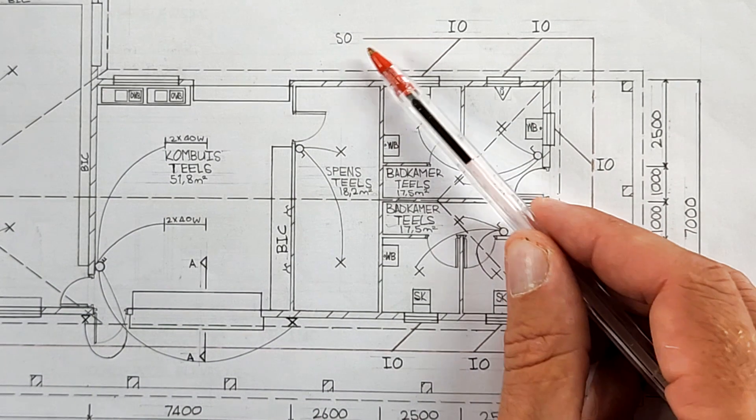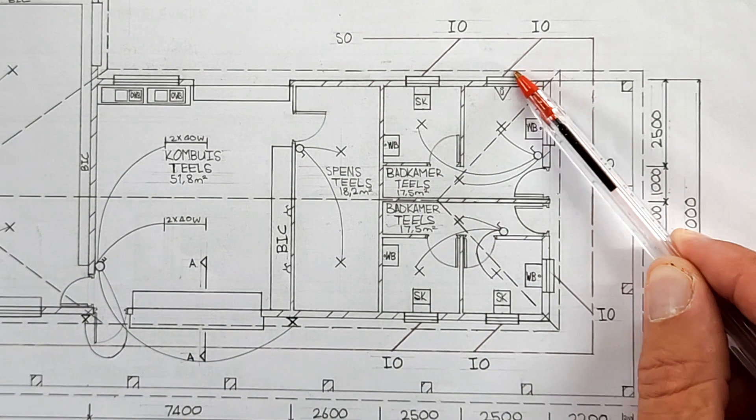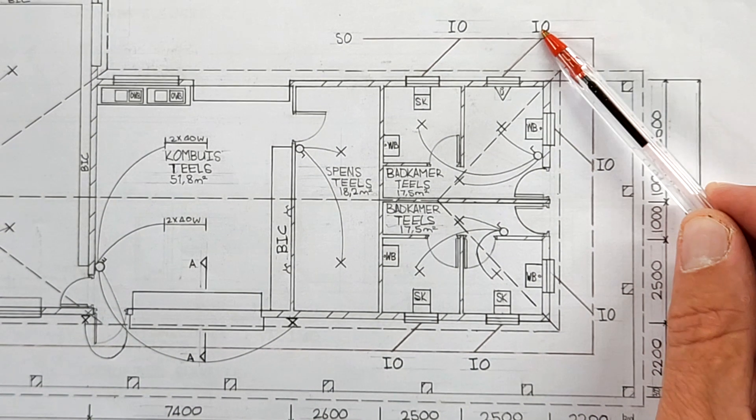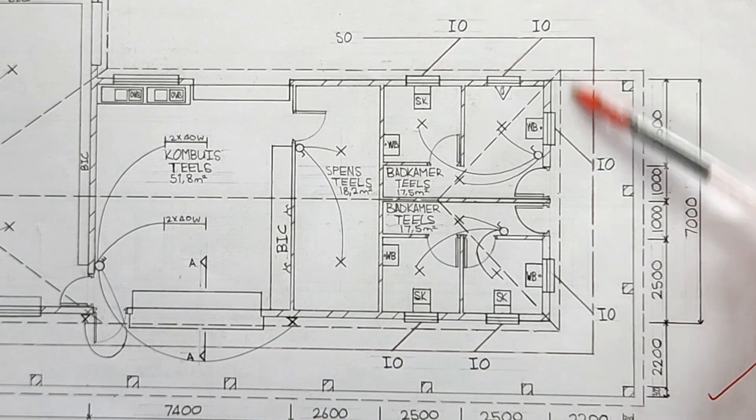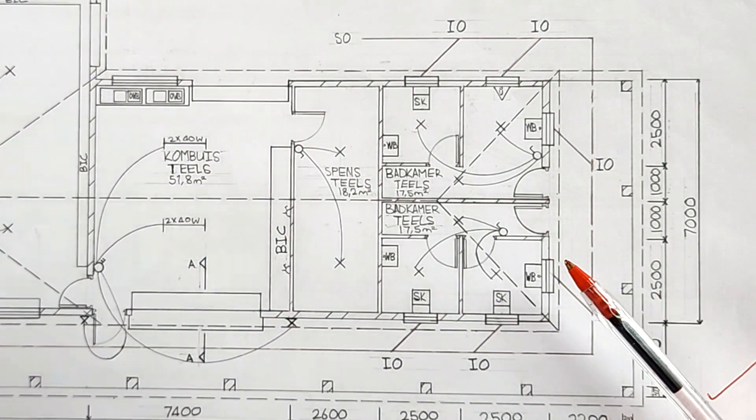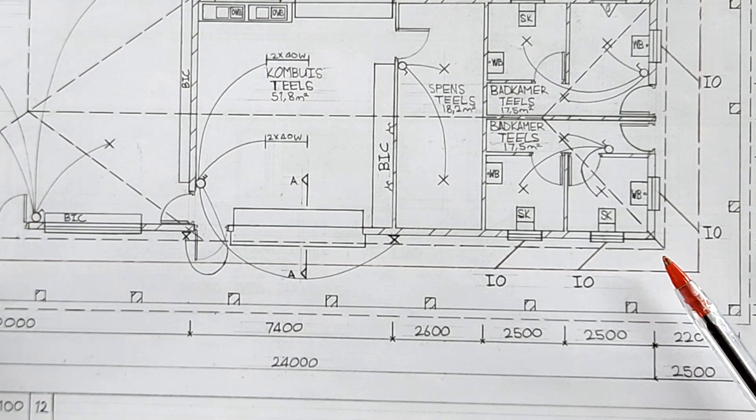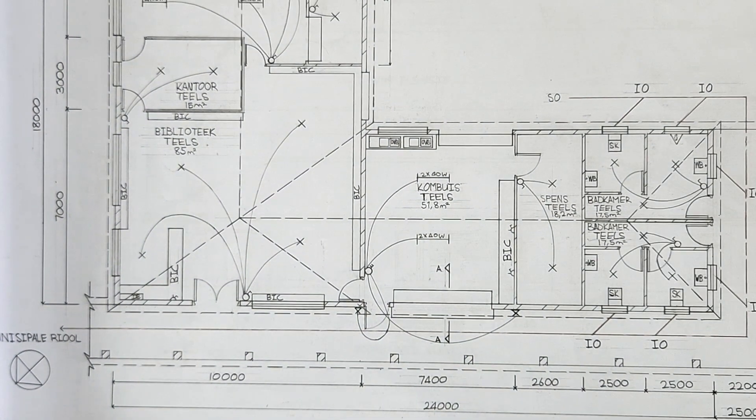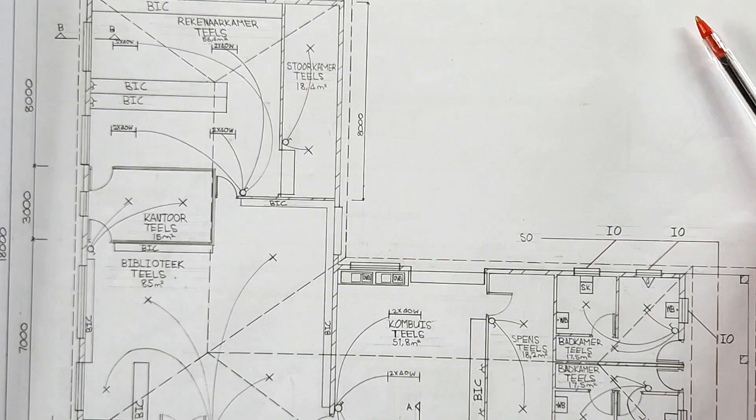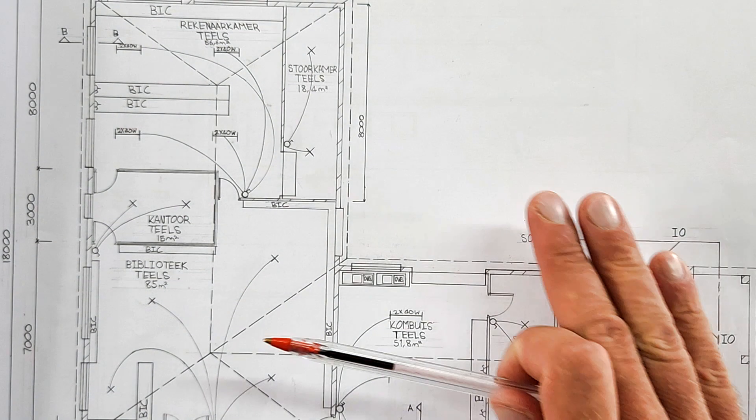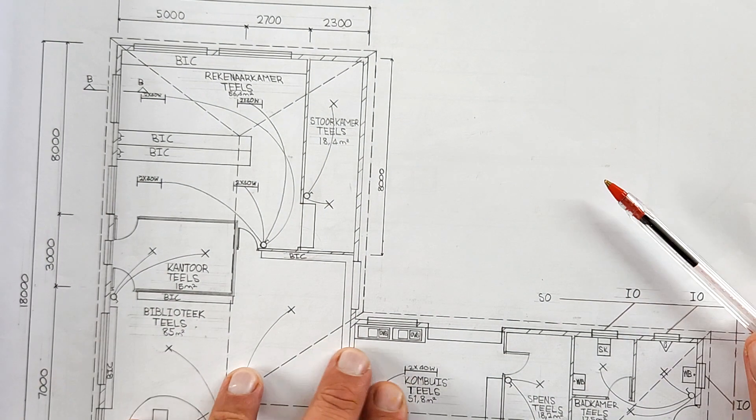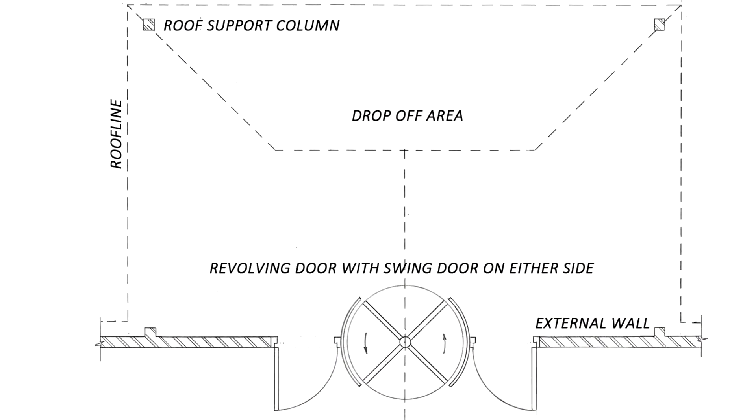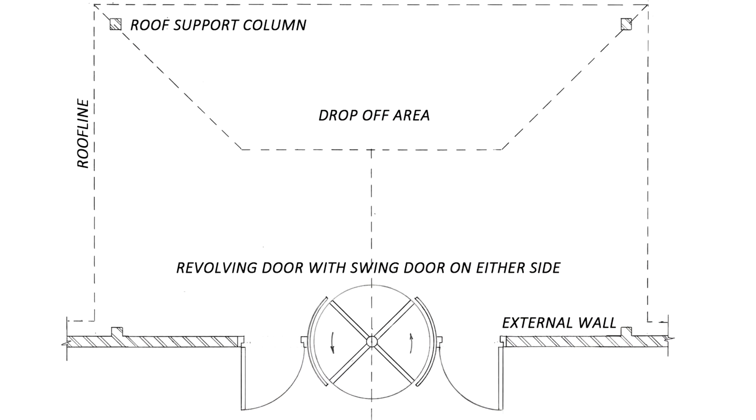They talk about the sewer detail, which I encourage you to do in a different color—it's brown. Make sure it's correctly labeled—inspection eyes, rodding eyes, etc. Then at the bottom, your north arrow. You will have to add on yours your drop-off area, which isn't included in this example because this wasn't the specification, but you'll have to have a drop-off area with your rotating doors.